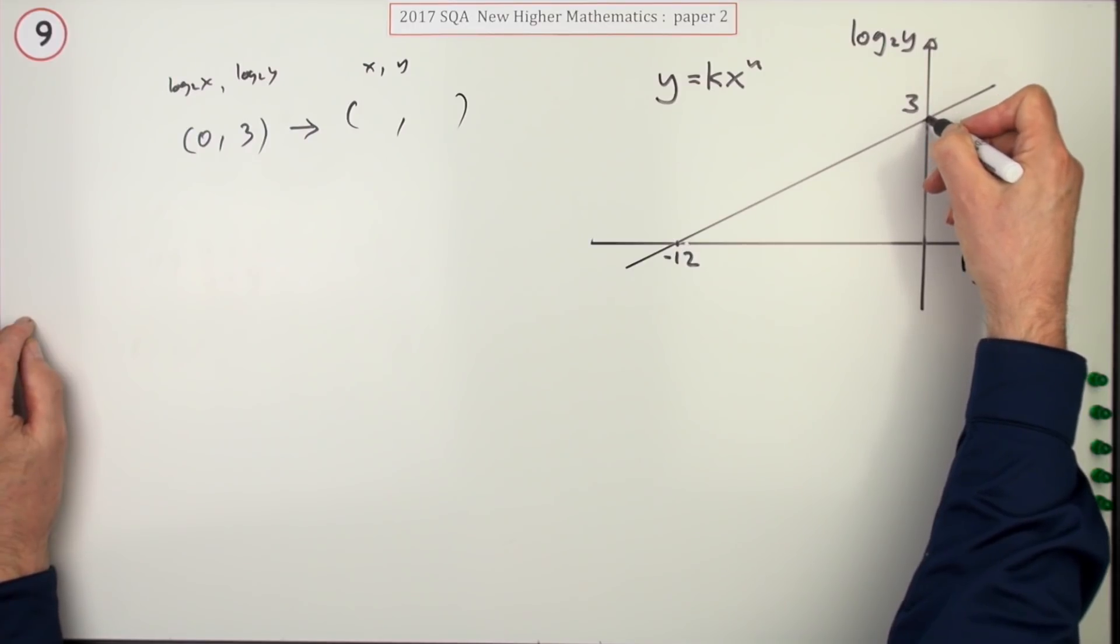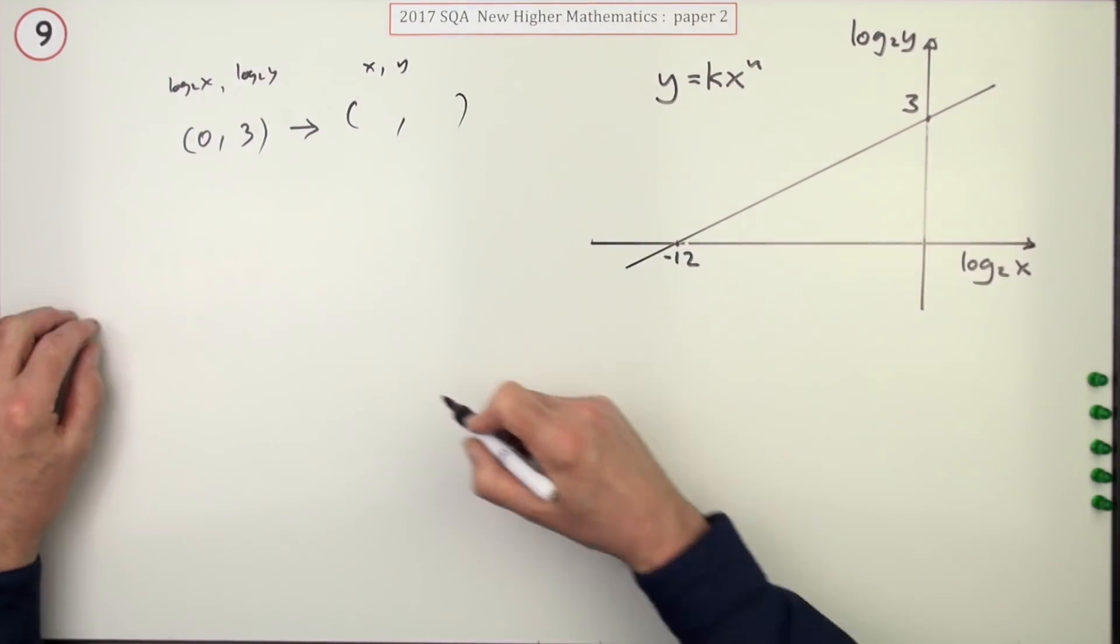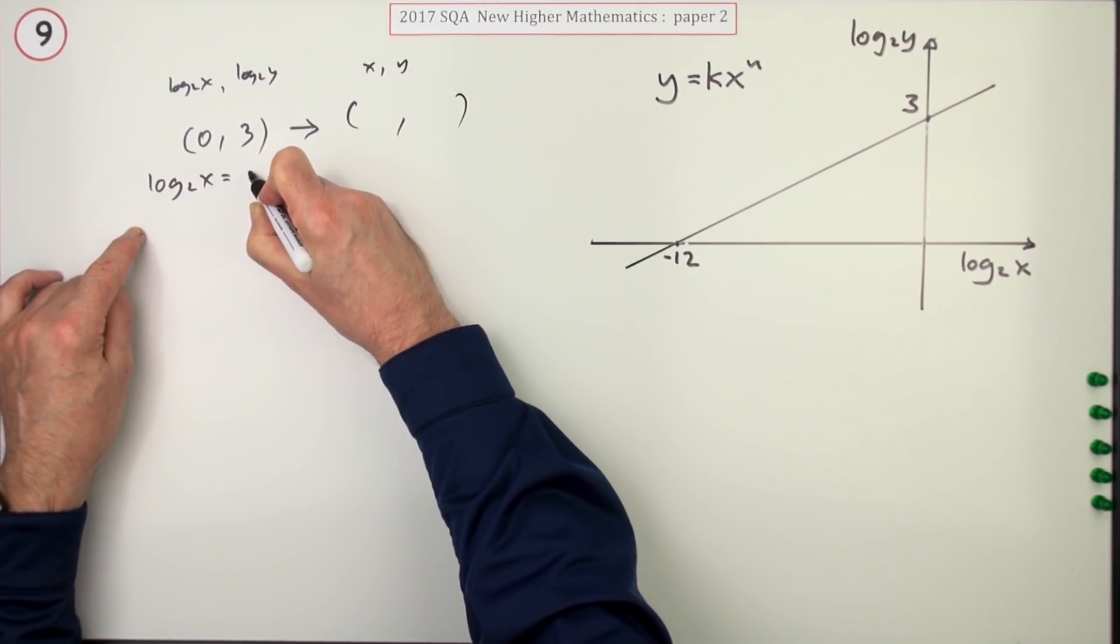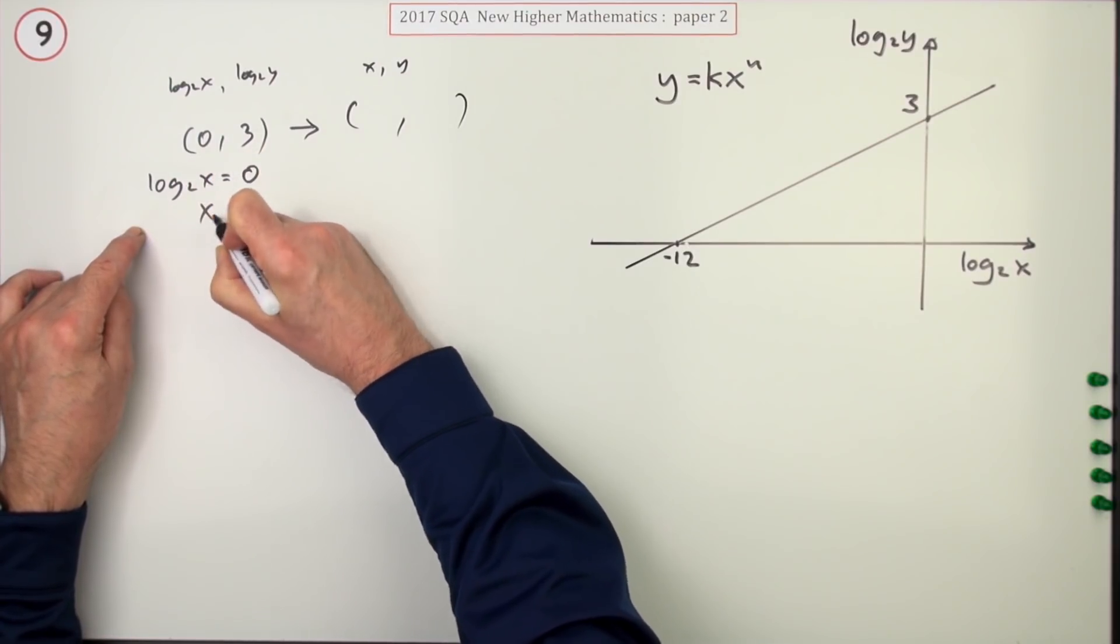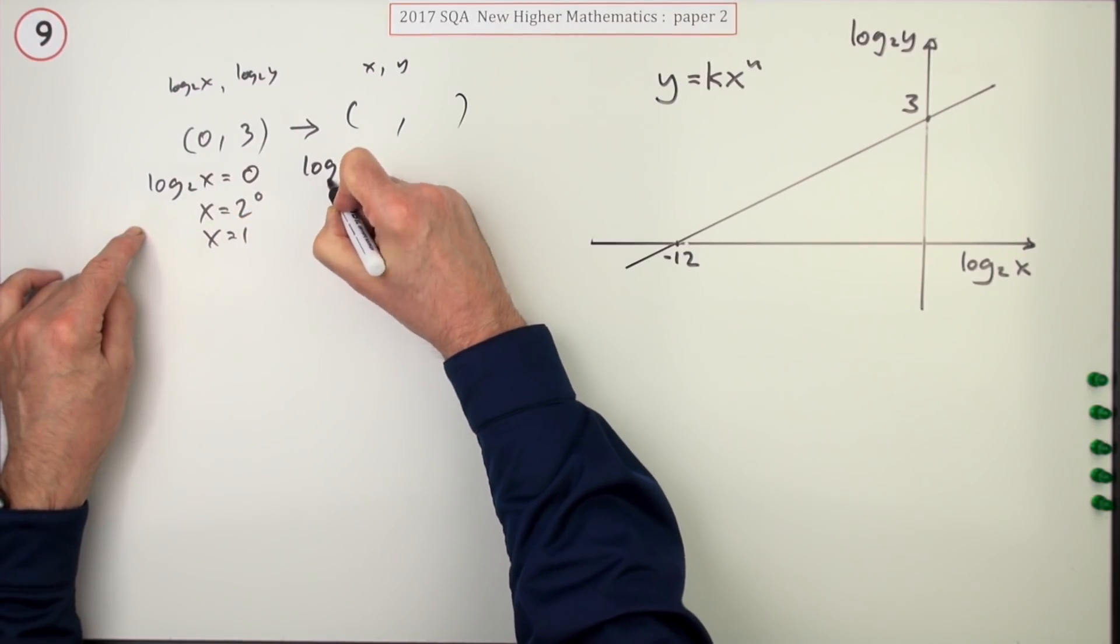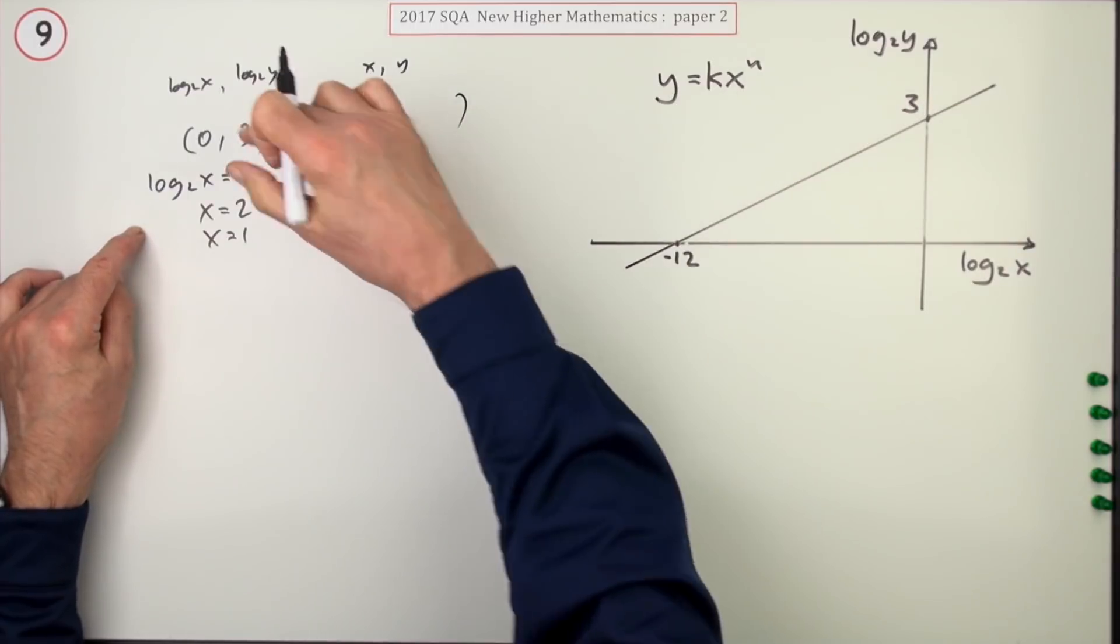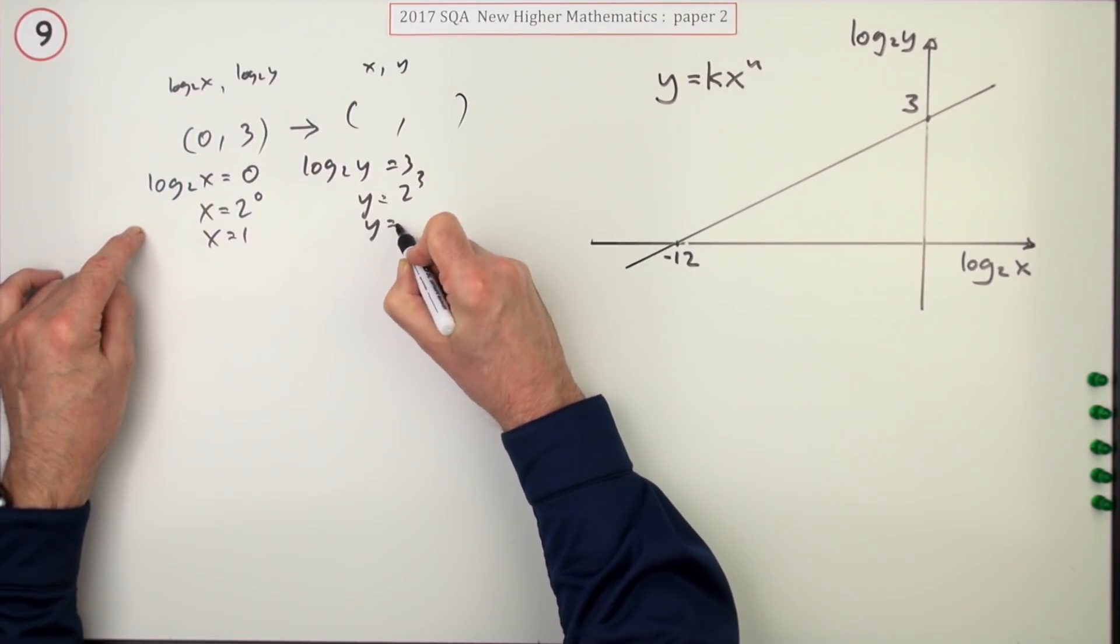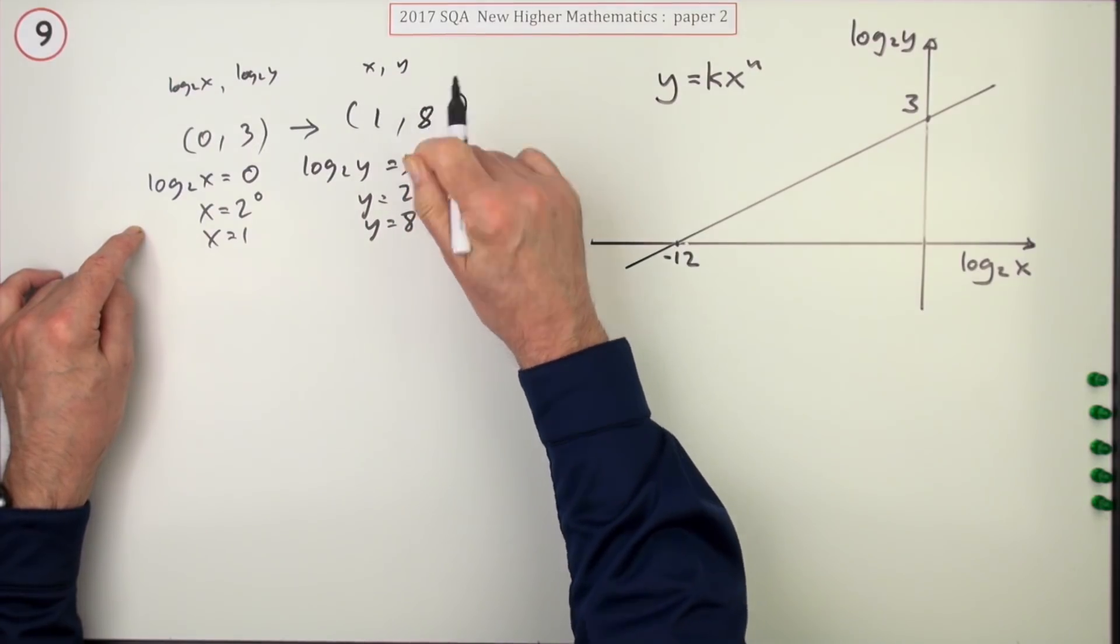Going from log 2x log 2y to XY, well I'll start with the zero. That's the log 2x. Log 2 of x is zero means x is 2 to the power of zero, x is 1. Log 2 of y is 3, meaning y is 2 to the power 3, so y is 8. So there's one pair you could put into this.